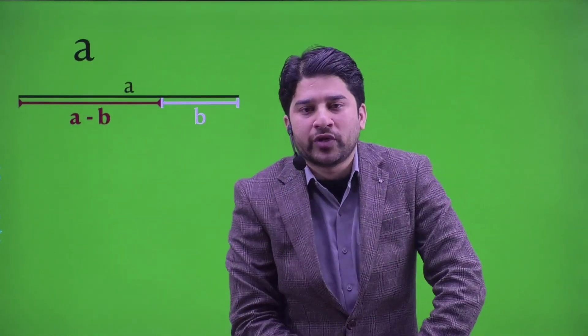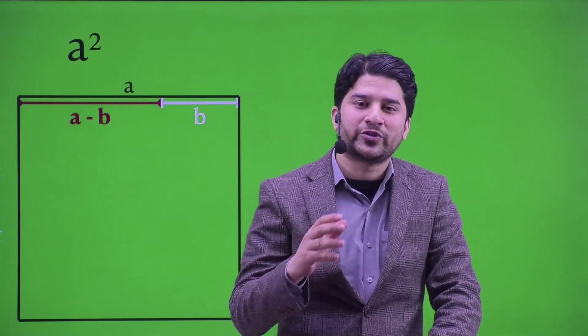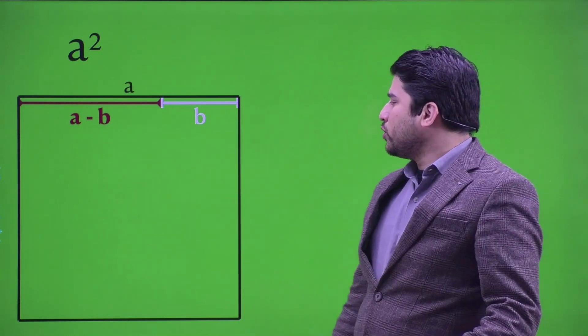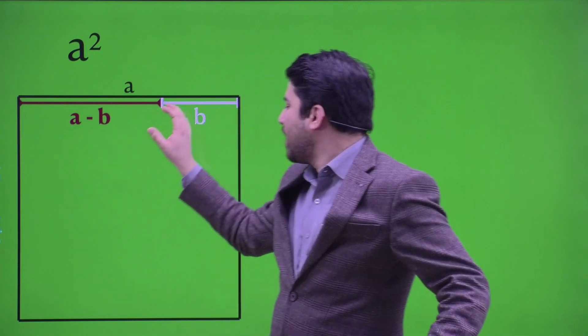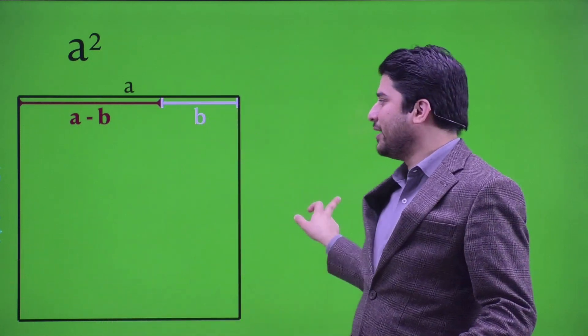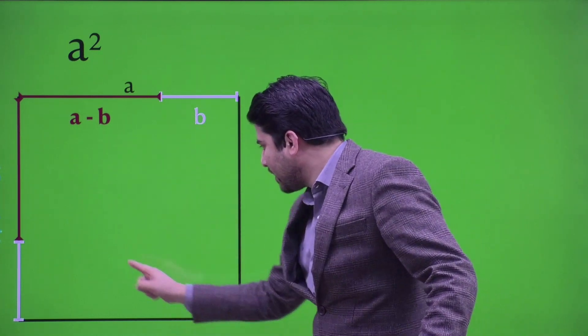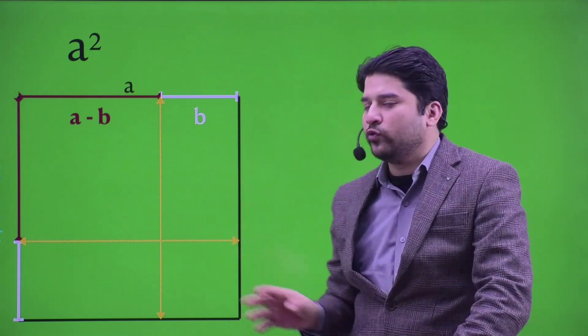Now I want you to visualize a square of side a by a, something like this. The area of this square is side into side, that is a into a, that is a square. Now I want you to project this horizontal red line on this vertical length, and this horizontal white line on this vertical side, something like this. Then I want you to join this junction and this junction, something like this — which means you have broken the complete area of a square into four regions.